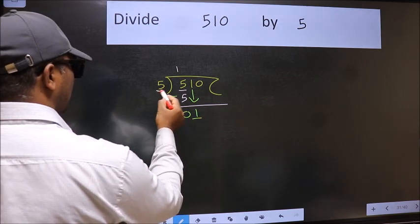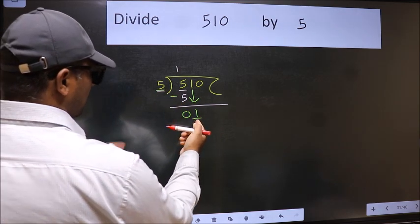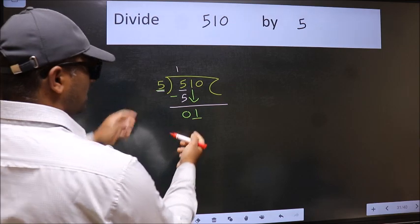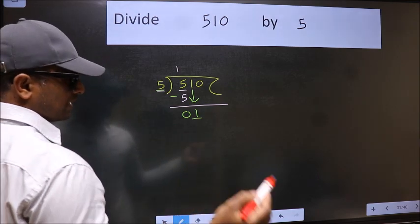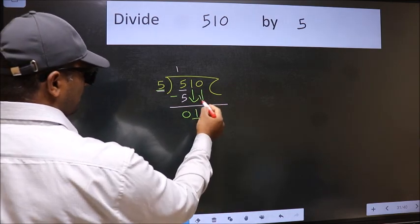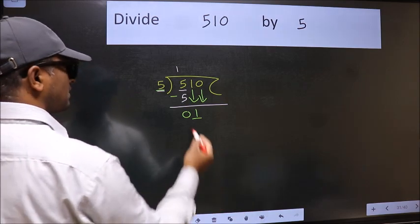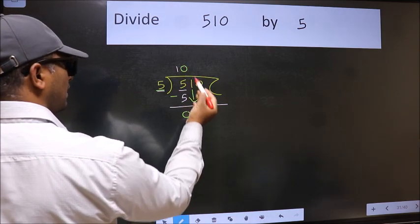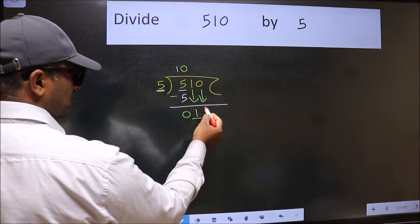Now here we have 1 and here 5. 1 is smaller than 5. So we should bring down the second number. And the rule to bring down second number is we should put 0 here. Then only we can bring this number down.